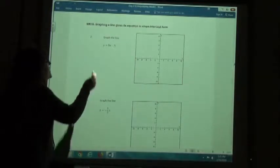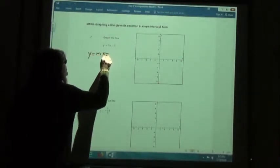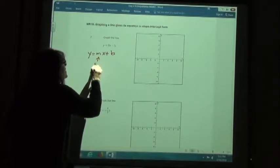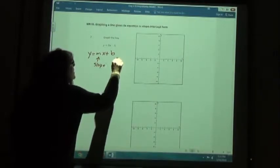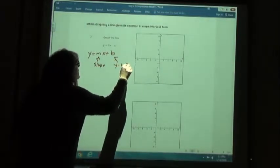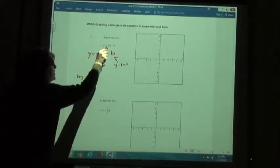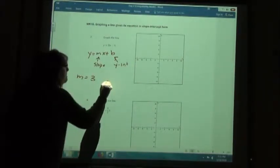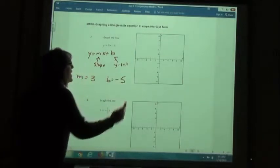In this case again, y equals mx plus b, m being my slope, the b being the y-intercept. So in this case, m, my slope is going to be 3, b, my y-intercept is negative 5.